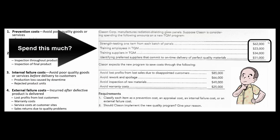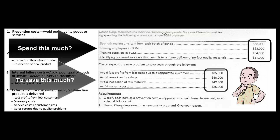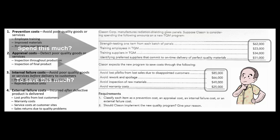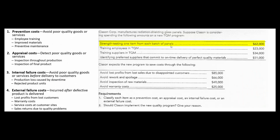Kloss & Korp is thinking about spending this much money to save this much money. First the problem wants us to classify these costs. Strength testing one item from each batch of panels is going to cost $62,000 — and that of course is an appraisal cost, because it allows us to detect poor quality goods before they go out.